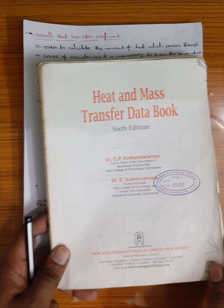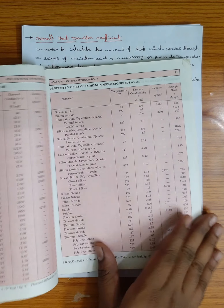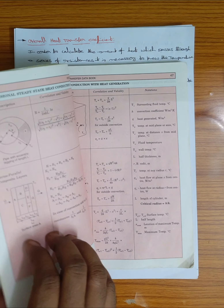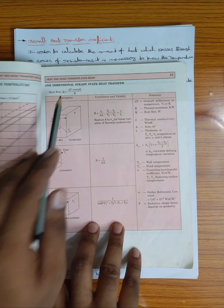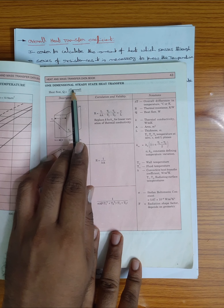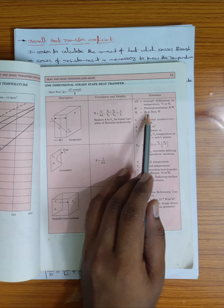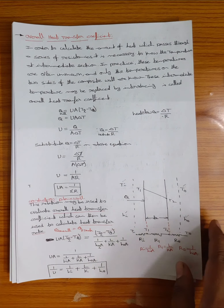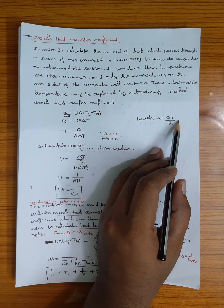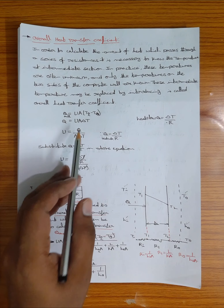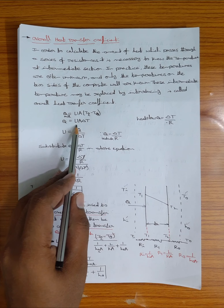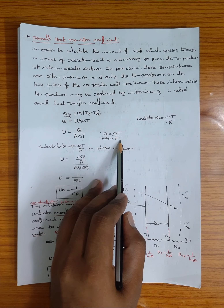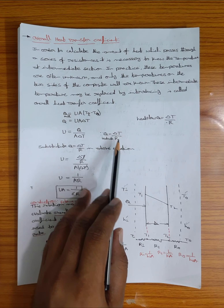From the heat transfer data book, sixth edition, page number 43: heat flow Q equals ΔT by R, where R is thermal resistance in Kelvin per watt. From this, UA × ΔT gives U = Q / (A × ΔT). Substituting Q = ΔT / R into this equation gives U = ΔT / (R × A × ΔT).